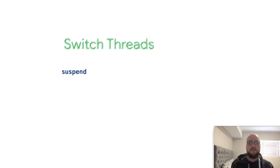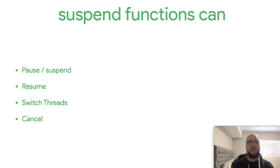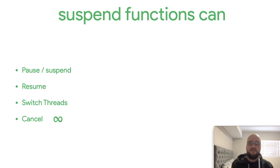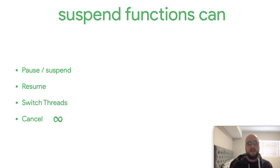The other big thing suspend functions can do is cancellation. You can cancel a loop that would otherwise try to run forever. The big difference cancellation makes is it allows you to write infinite loops — it feels wrong because we've been taught to avoid them, you'll have memory leaks, the loop will try to run forever. But if you can cancel an infinite loop, there's no reason not to write one if you know you're doing it correctly.